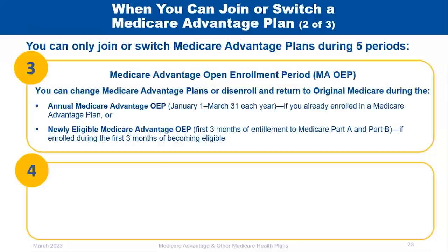The Medicare Advantage Open Enrollment Period runs annually from January 1st to March 31st. If you've already enrolled in a Medicare Advantage plan or are newly eligible for Medicare, this is your opportunity to change plans, switch to a different Medicare Advantage product, or disenroll and return to original Medicare.